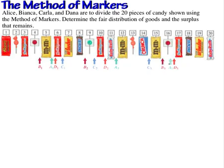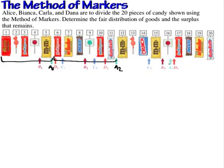Markers could be a chip or anything that serves as a placeholder. If we look at Player A's first chip, it includes all items from 1 to 5 — those five pieces of candy are the first fair share according to Player A. The next fair share for Player A is items 6 to 11. The third fair share is items 12 to 16, and the fourth fair share is items 17 to 20. These are just from the point of view of Player A. Now we can put this into a table.